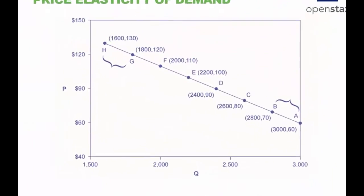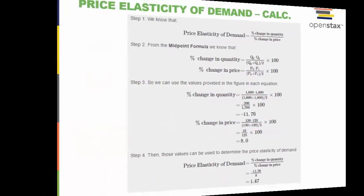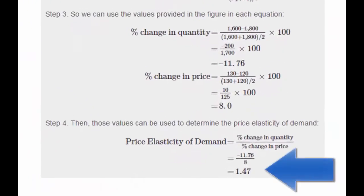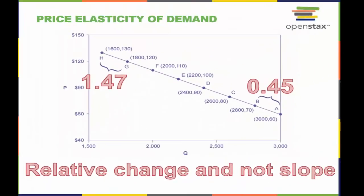Let's now compare the price elasticity of demand between points A and B to the price elasticity of demand between points H and G on the same linear demand curve. Will it be the same or different? Here is the calculation, and we see that it is different. Why are these coefficients different? It is because we are calculating relative changes between price and quantity, not merely slope or opportunity cost.